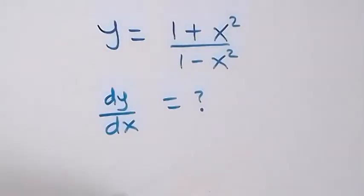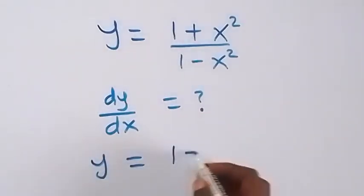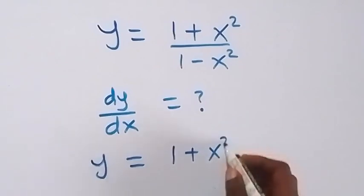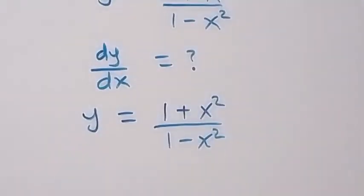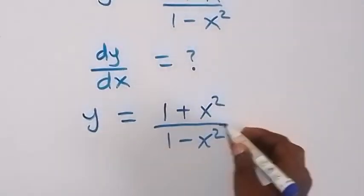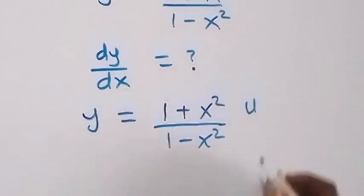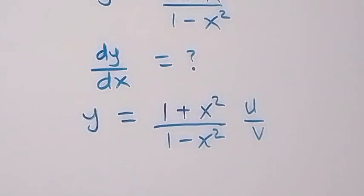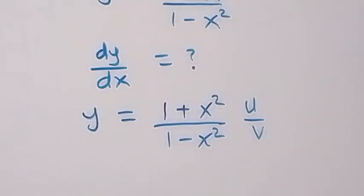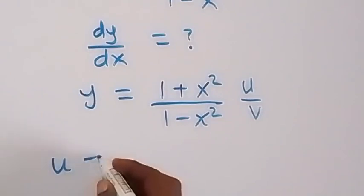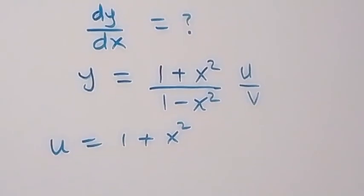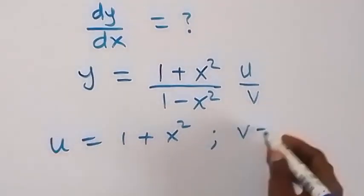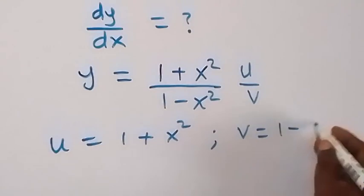From the equation given, y equals (1 plus x squared) over (1 minus x squared), we have this in the form of a quotient, u over v, where u is 1 plus x squared and v is 1 minus x squared.